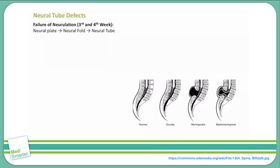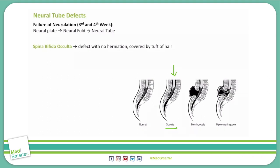We start with spina bifida occulta. This is caused by a failure of the caudal aspect of the neural tube to close completely. As you can see in this image, there's a defect in the lower spine, but the spinal cord is still contained within the spinal canal — there's no herniation of content. Questions describing spina bifida occulta will often describe a tuft of hair on the lower back. It is the most common type of neural tube defect, and you should always suspect it if a child has a tuft of hair on their lower back.